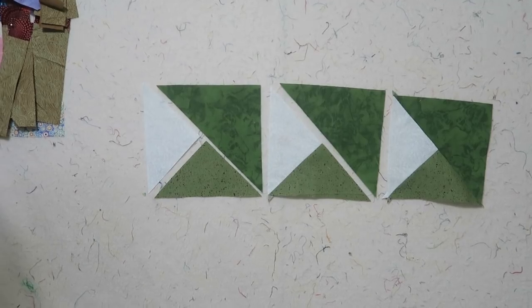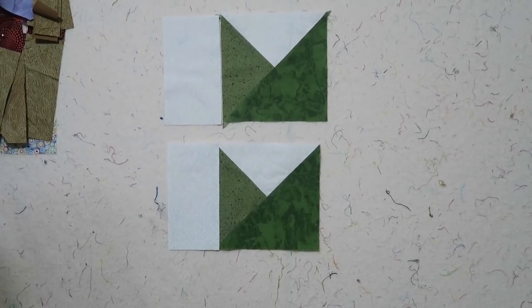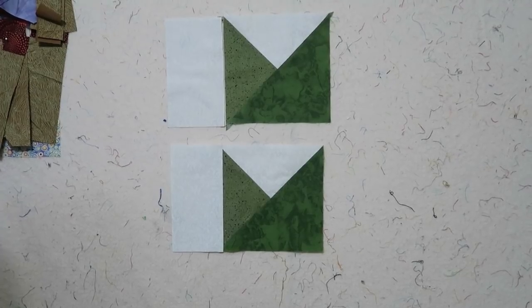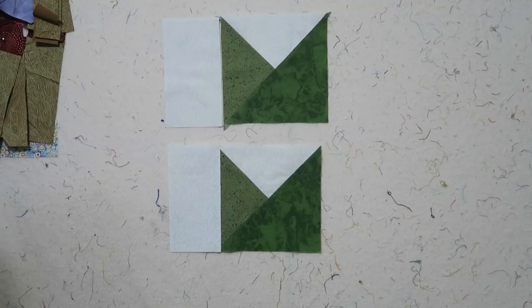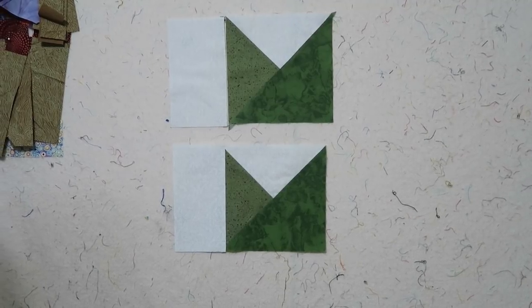So I'm going to go piece all four of these units and I'll be right back. I have all four of my units sewn together and the next step is to sew a rectangle to the left side of this unit.